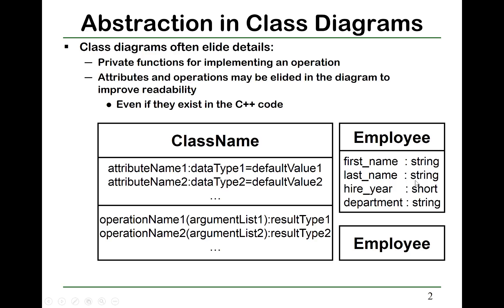In some contexts, such as describing the relationship among many classes, you may elide the operations and even the attributes, because if you include everything in such context, then it will be crowded.